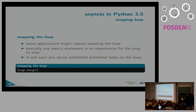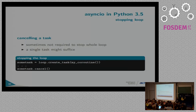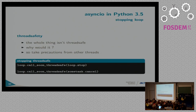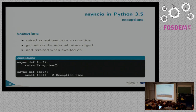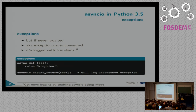Your application might require stopping the loop or individual tasks. Basically any await statement in any coroutine is a chance for you to stop the loop — none of that nonsense of not being able to stop a thread where you forgot to build in a stopping mechanism. You need a handle to the task to cancel it later. If you stop or cancel from another thread, the loop API isn't thread-safe — but there's call_soon_threadsafe to schedule coroutines, stops, and cancels from another thread.